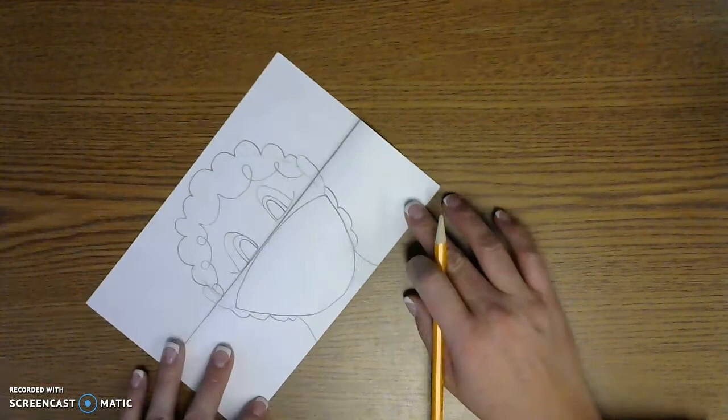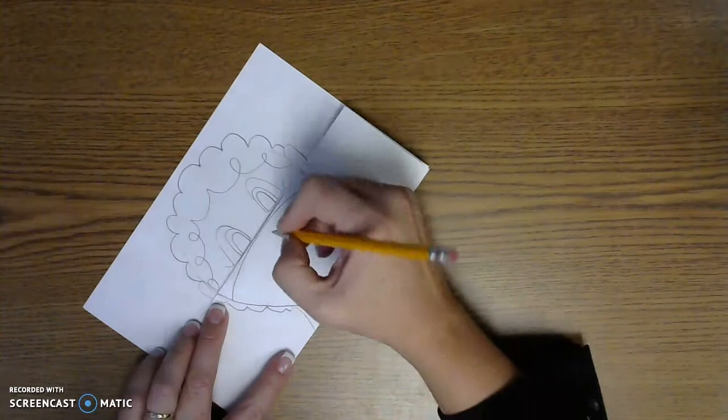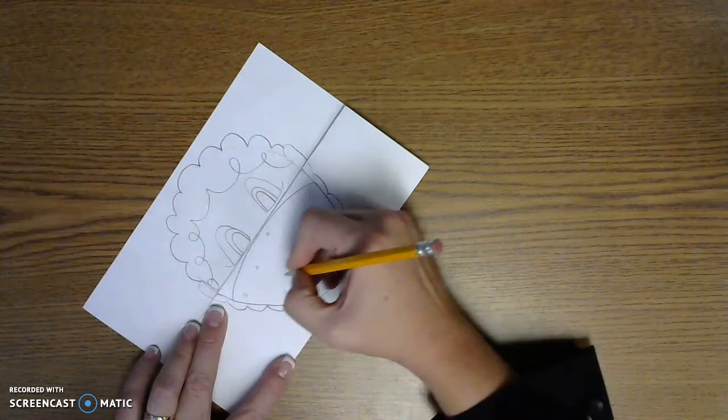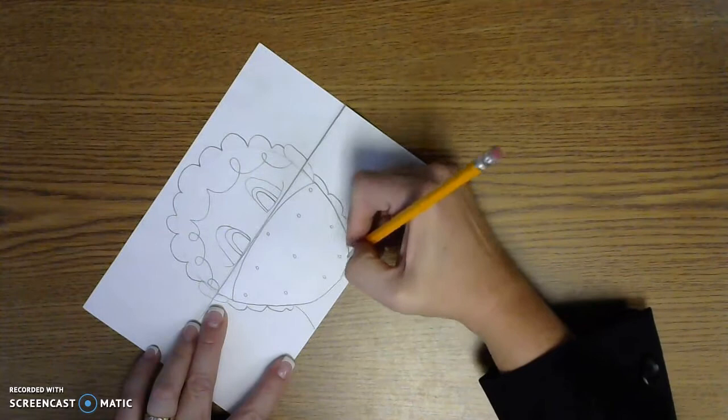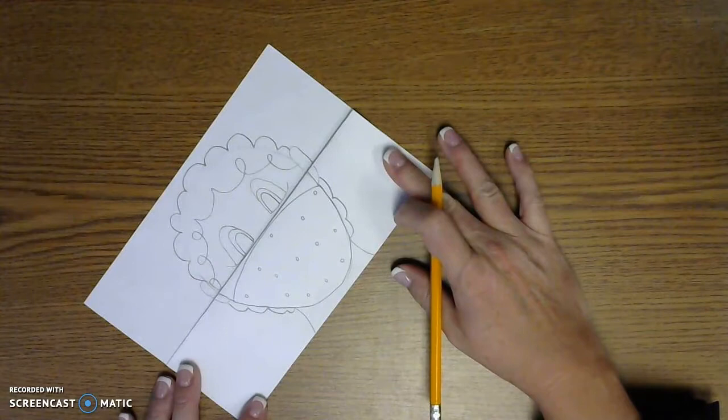And the mask that I'm wearing today, I'm going to draw that in my picture. Because we've all been so lucky to have fun masks. Some of them are brightly colored. Some of them have pictures on them. Some of them are more simple. My son just wanted a plain black one. But the one I'm wearing today is black with white polka dots. So that's what I drew on mine.